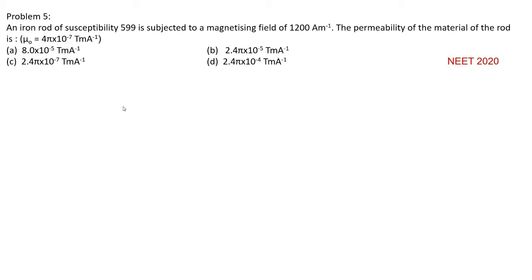We go into the solution. You are given susceptibility value, this is represented as chi, 599, susceptibility.